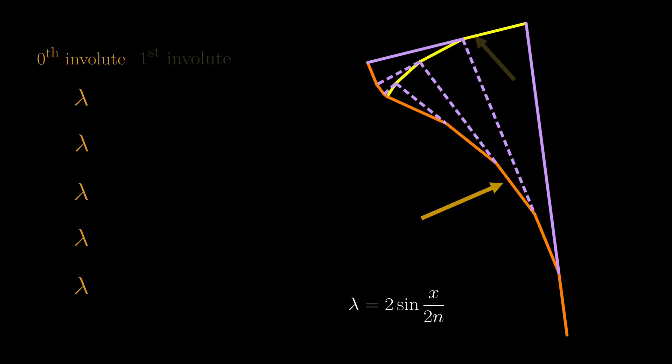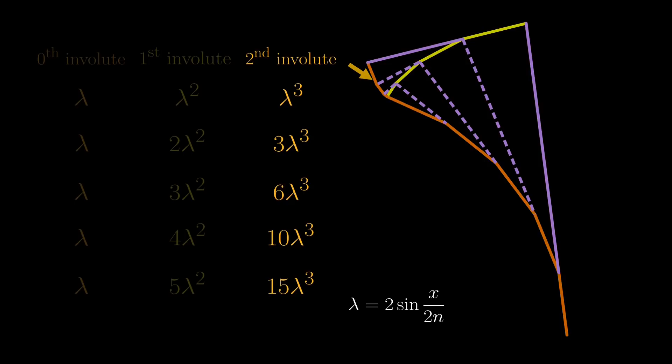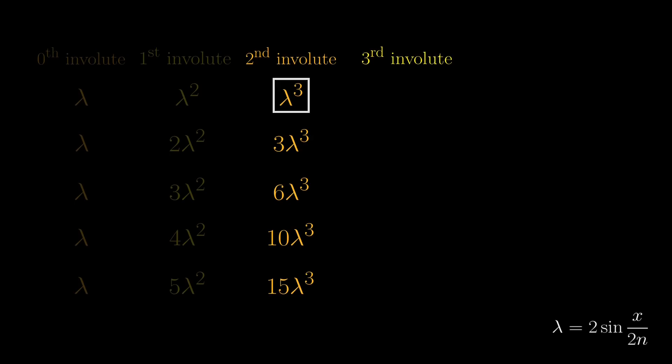The 0th involute has segments of length lambda, while the first involute has length lambda squared, 2 lambda squared, and so on, and the second involute has lengths lambda cubed, 3 lambda cubed, and so on. To make the pattern clearer, let's do one more. For the third involute, first row is just this box multiplied by lambda, so it is lambda to the 4. And then, the next one will be the sum of these two, multiplied by lambda, so 4 lambda to the 4, and so on.